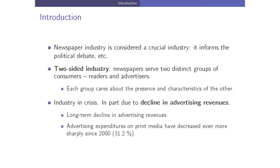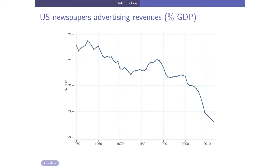What we want to focus on is the fact that this is a two-sided industry where newspapers have two distinct groups of consumers — readers and advertisers — and where each group cares about the presence and characteristics of the other. This industry is in crisis, in part due to decline in advertising revenues. US newspaper advertising revenues as a share of GDP since the 1950s have been divided by nearly four in 60 years.